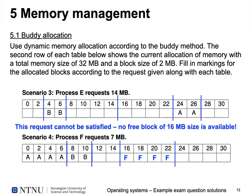Scenario three: two 2-megabyte blocks allocated for B from 4 to 7, and another 4-megabyte block from 24 to 27. Process E requests 14 megabytes, rounded up to 16 megabytes. This would fit in one region, however the starting point is not divisible by 16 — it's 8. With a buddy allocator a block of 16 megabytes must start at an address evenly divisible by 16. So we cannot find any contiguous 16-megabyte aligned block, and even though we have lots of free memory, we cannot satisfy the request.